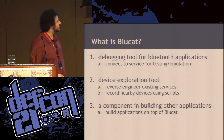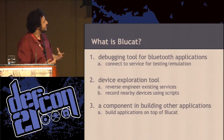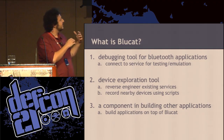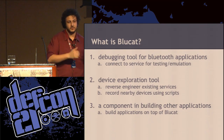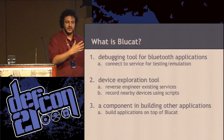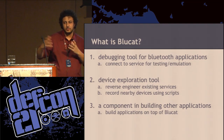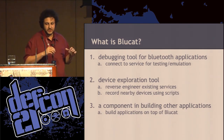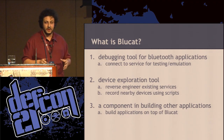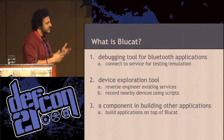So what is BlueCat? There are three main reasons. First, it's a debugging tool for Bluetooth applications. If you're writing a Bluetooth app, you can use it to debug your own application — see what's going on, like did you modify the service record properly so other devices can see it? You don't want a full-blown client ready; you might just want a makeshift client to see what's going on, or if you want to fuzz your own app, you can do that with minimal overhead.